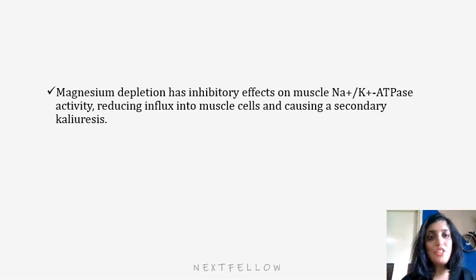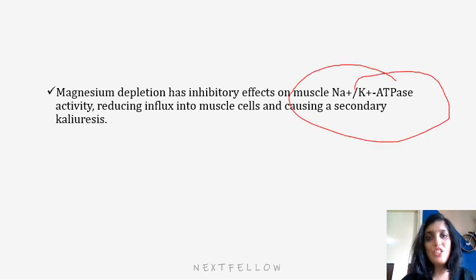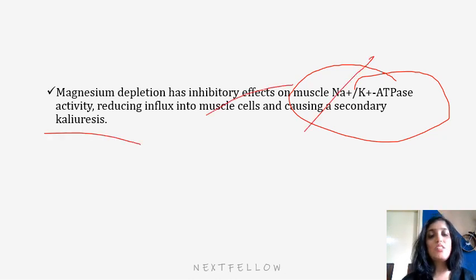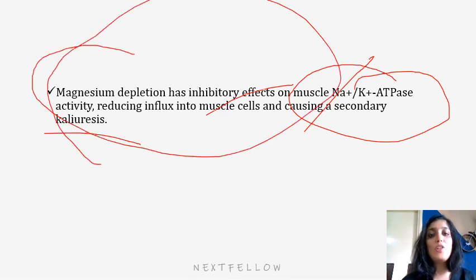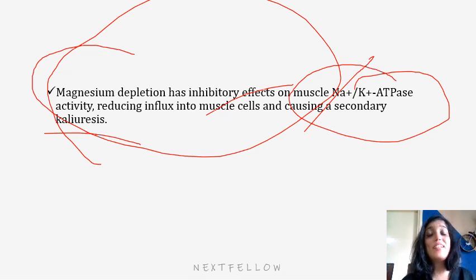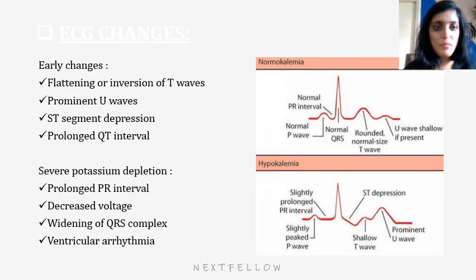Magnesium depletion causes inhibitory effects on the muscle sodium-potassium ATPase activity, which reduces the influx into the muscle cells and causes secondary kaliuresis. So magnesium deficiency can also cause potassium deficiency. When there is especially resistant hypokalemia — when the patient is not responding in spite of adequate potassium supplementation — always check for the magnesium levels.